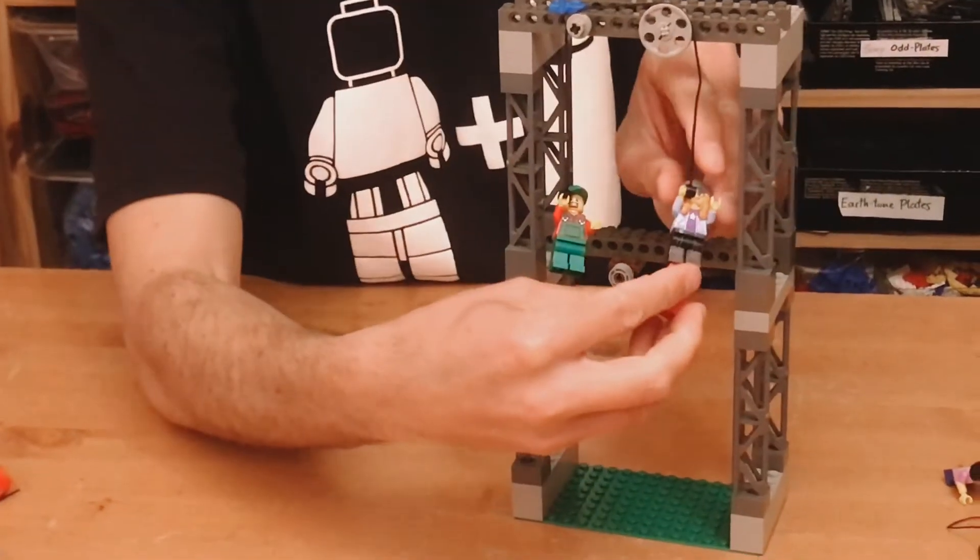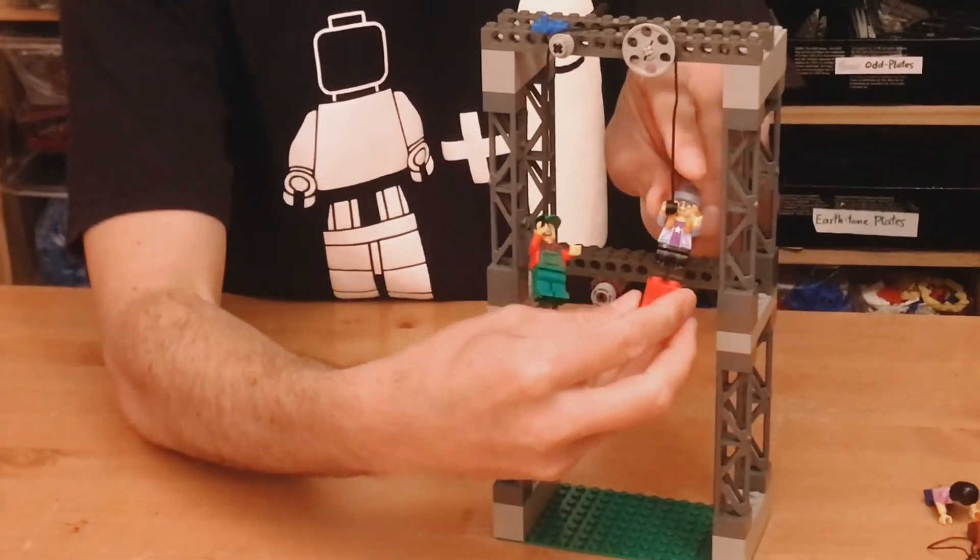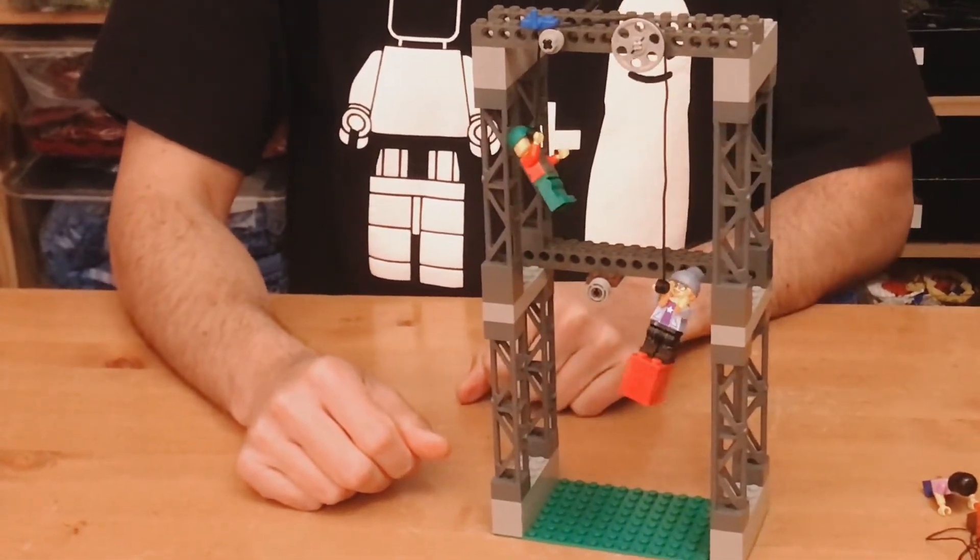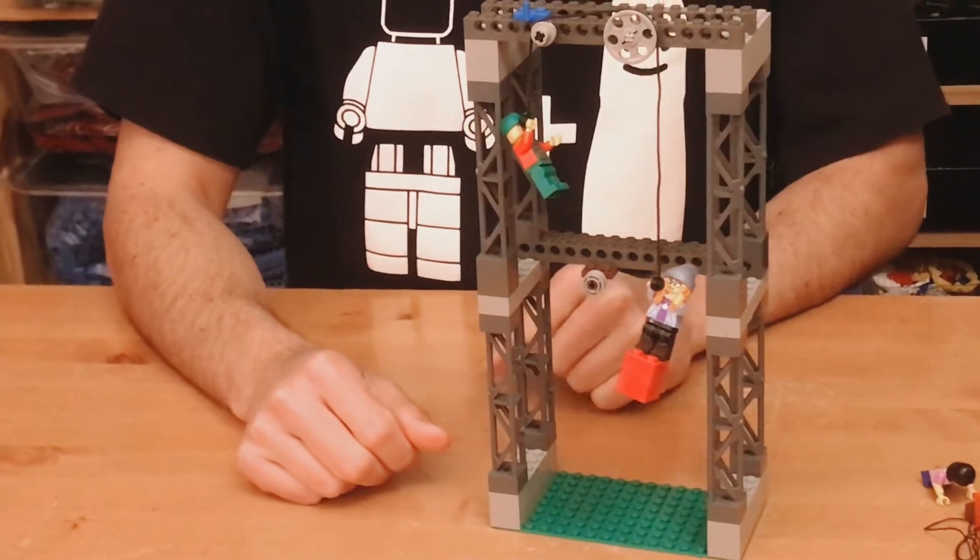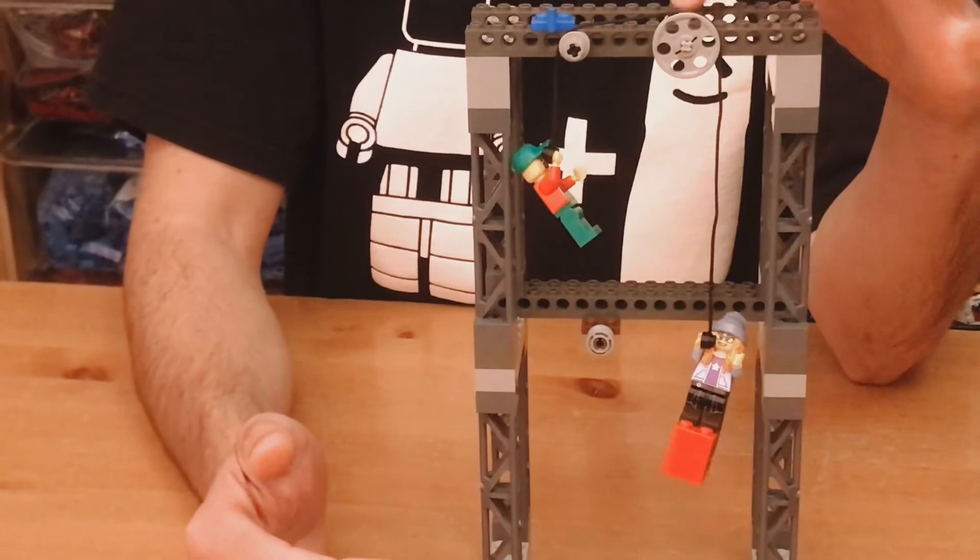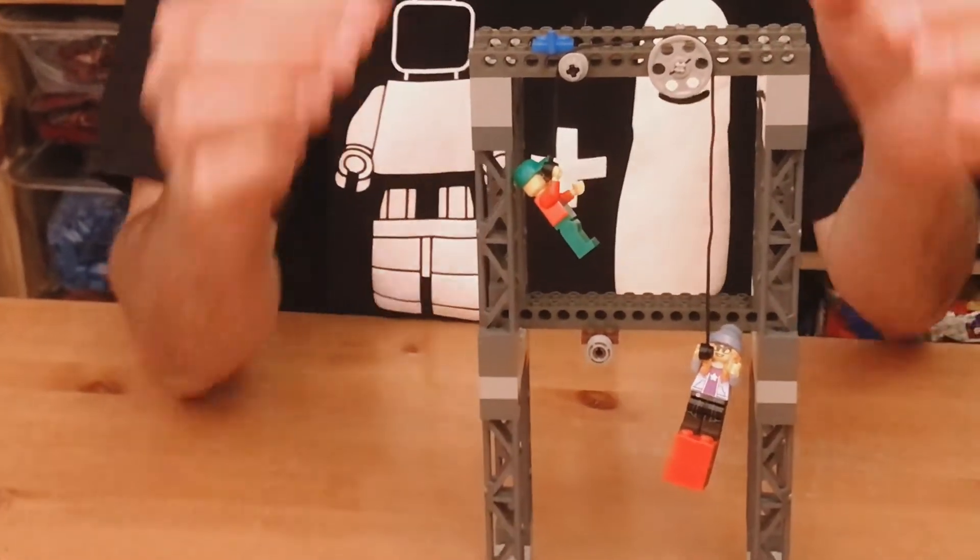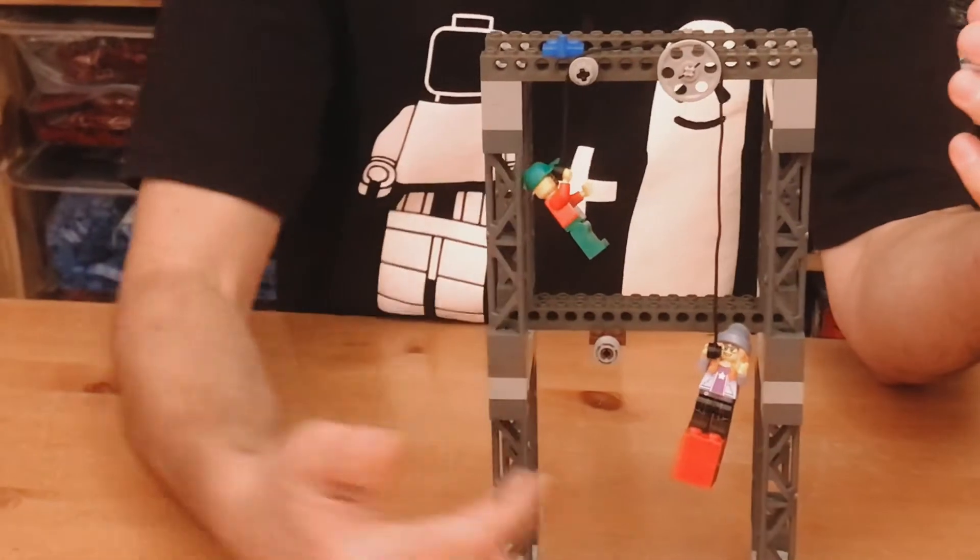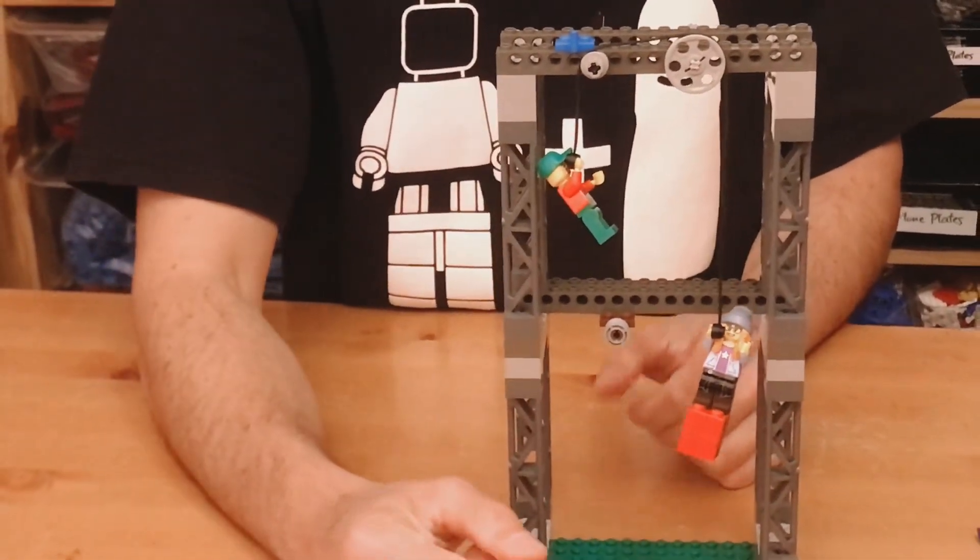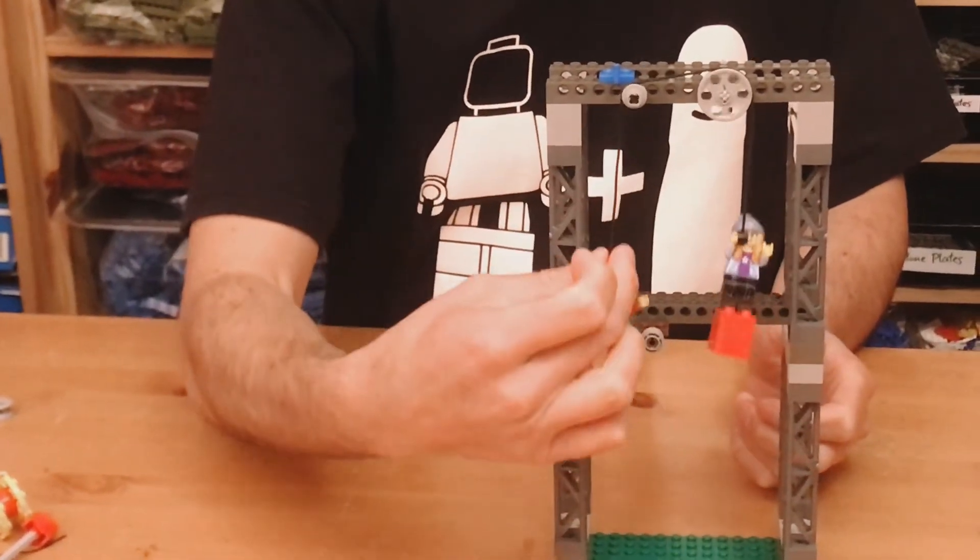If I add a couple of Lego bricks to this person, you would think that she would start to go down. But she doesn't because of friction. So in this case, there's friction on this axle, and there's friction on this axle. And all of that friction is slowing down this mechanism enough that two Lego bricks isn't enough extra weight to overcome friction in this mechanism.